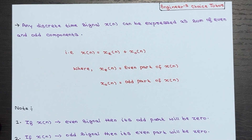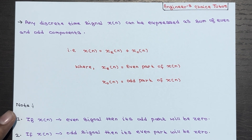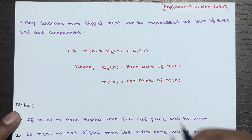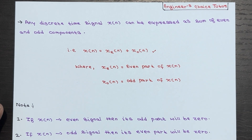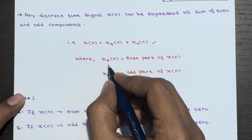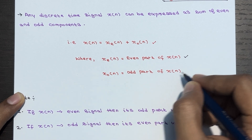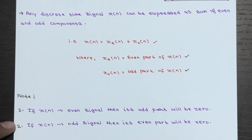Here is the interesting part: any discrete time signal X(n) can actually be expressed as the sum of even and odd components. Even if a signal does not exhibit perfect symmetry or anti-symmetry, it can still be broken down into these two components. We can decompose X(n) as the sum of its even part Xe(n) and its odd part Xo(n).